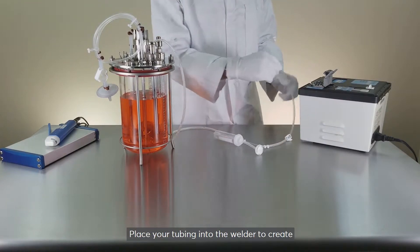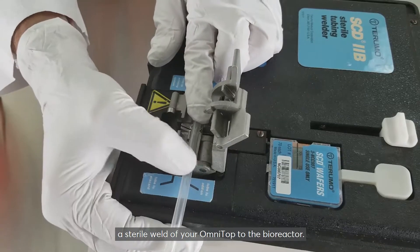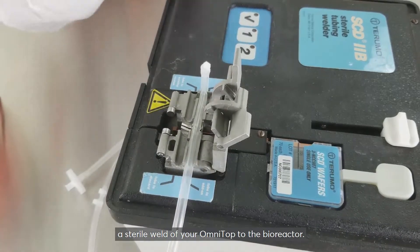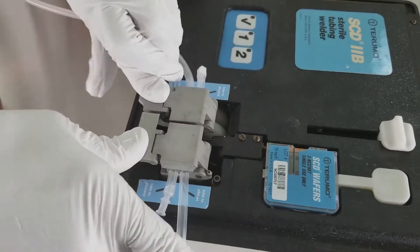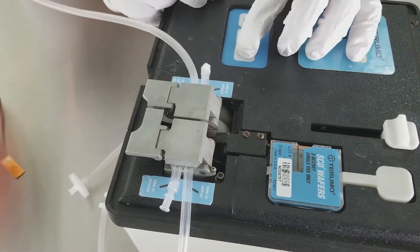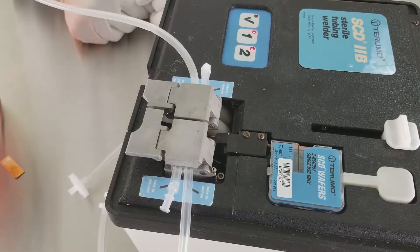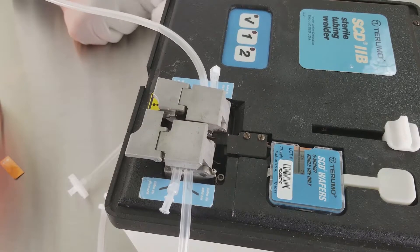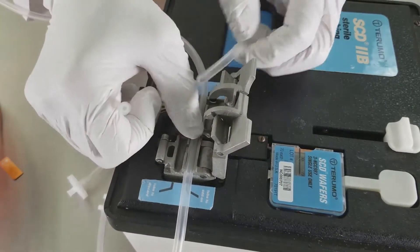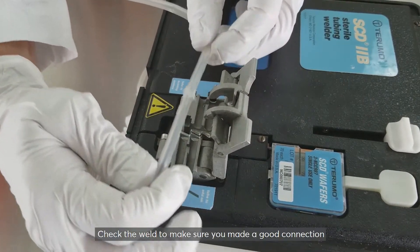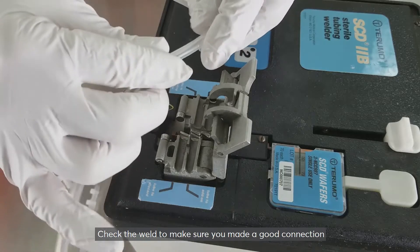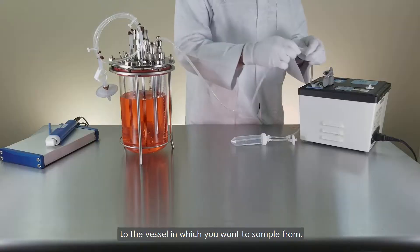Place your tubing into the welder to create a sterile weld of your OmniTop to the bioreactor. Custom connections are available too. Check the weld to make sure you made a good connection to the vessel in which you want to sample from.